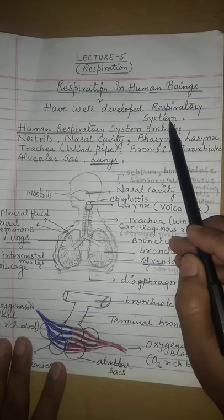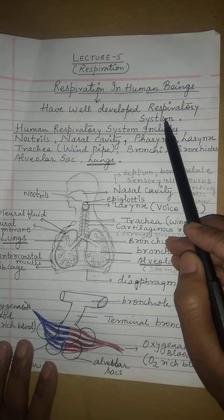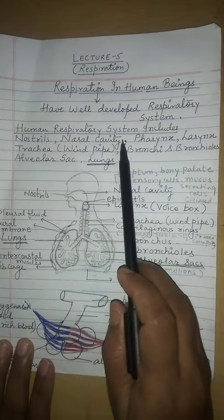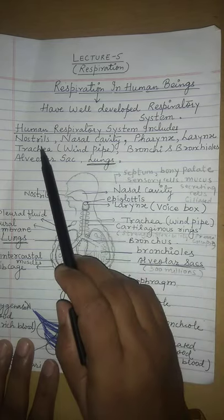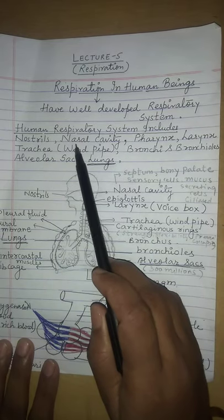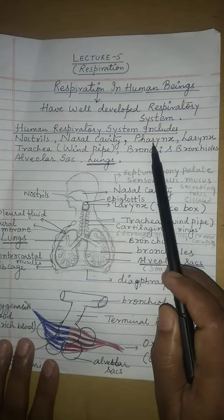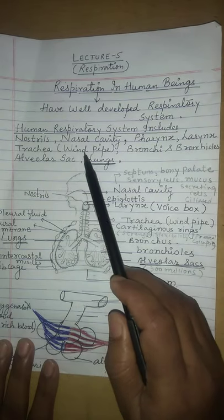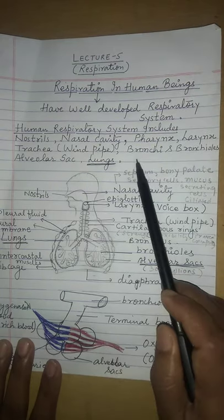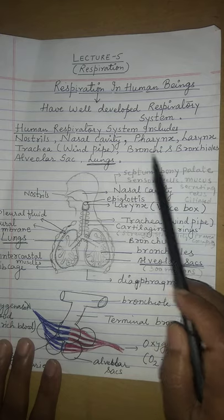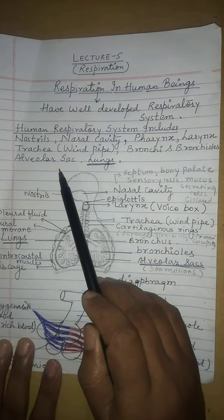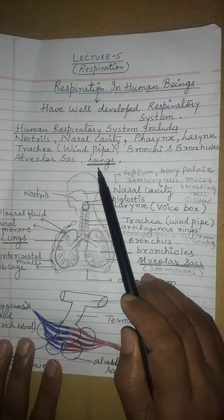The human respiratory system includes: nostrils, nasal cavity, pharynx, larynx, trachea (also known as the wind pipe), bronchi and bronchioles, and finally the alveolar sacs and lungs.